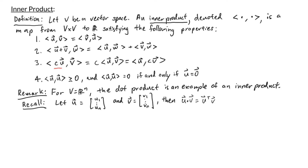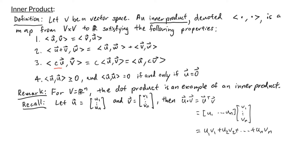We don't usually define the inner product in this way, but let's see that it's the same as what we're used to. When we have u transpose, it turns the column vector u into a row vector u₁ through uₙ, and we multiply this with the column vector v₁ through vₙ. This is a 1×n matrix multiplied by an n×1 matrix, giving u₁v₁ + u₂v₂ + … + uₙvₙ — the product of corresponding entries summed together. You can check that this satisfies all properties of an inner product.